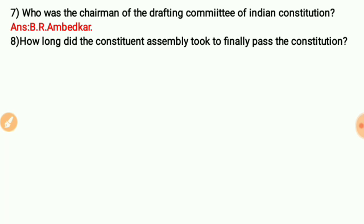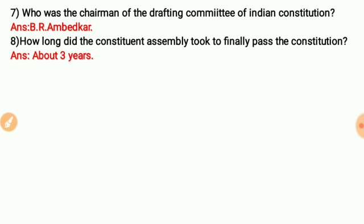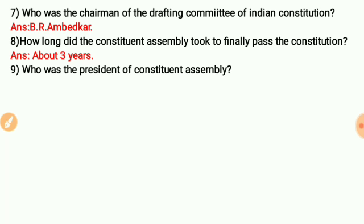How long did the Constituent Assembly take to finally pass the Constitution? It took about three years to finally pass the Constitution.